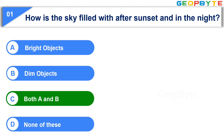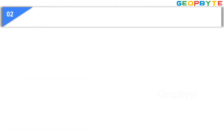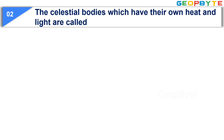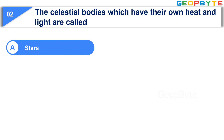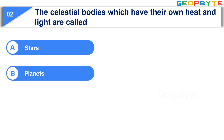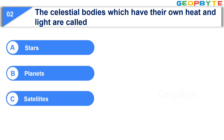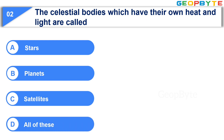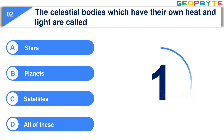That is bright objects and dim objects. Moving to the second question: The celestial bodies which have their own heat and light are called — Option A: Stars. Option B: Planets. Option C: Satellites. Option D: All of these. Your time starts now. Your time is up and the correct answer is Option A: Stars.